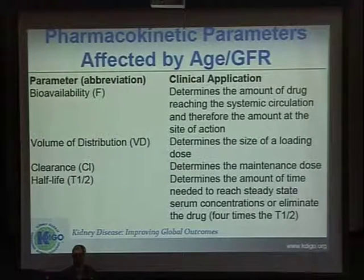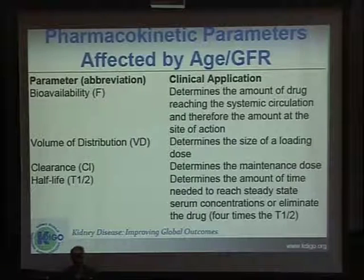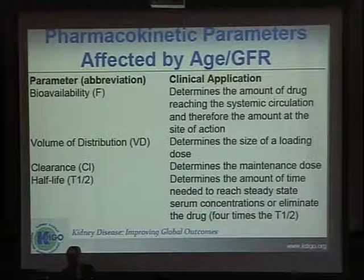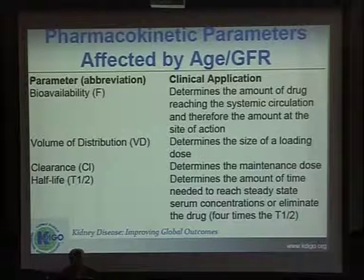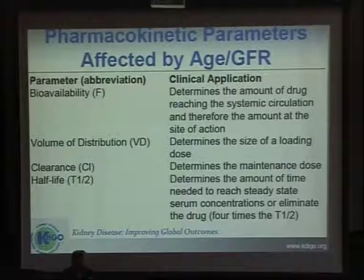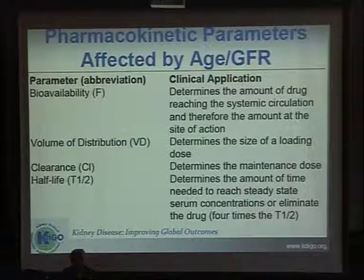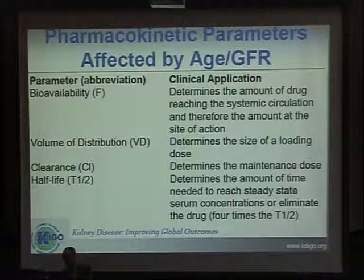There are some key nomenclatures to understand. Bioavailability determines the amount of drug reaching the systemic circulation and therefore the amount at the site of action. The volume of distribution determines the size of the loading dose — so when speaking about the loading dose, we have to consider the volume of distribution. Clearance determines the maintenance dose, so when we speak about the maintenance dose, we consider clearance. The half-life determines the time needed to reach a steady-state serum concentration, or to eliminate the drug.